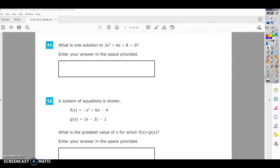All right, this is number 11 on the Algebra 2 practice test. It says, what is one solution to 3x squared plus 4x plus 8 equals 0?